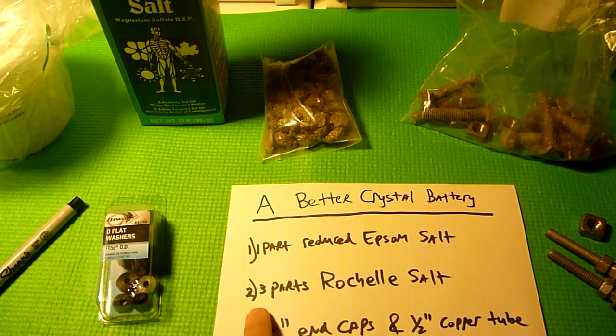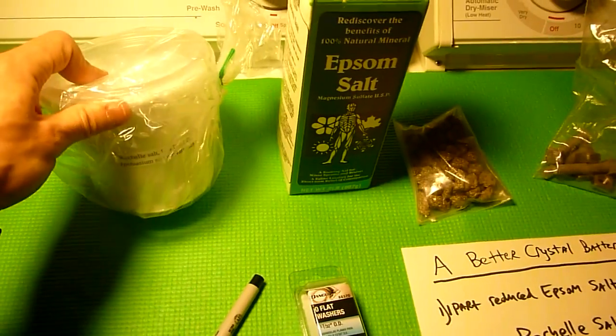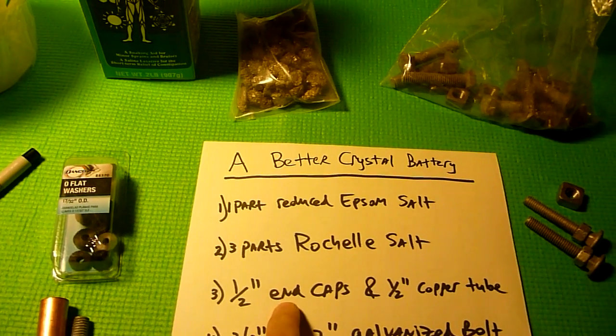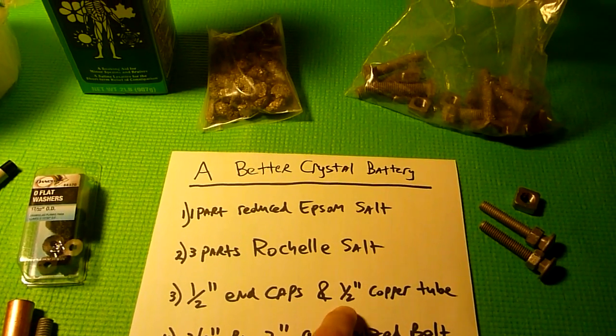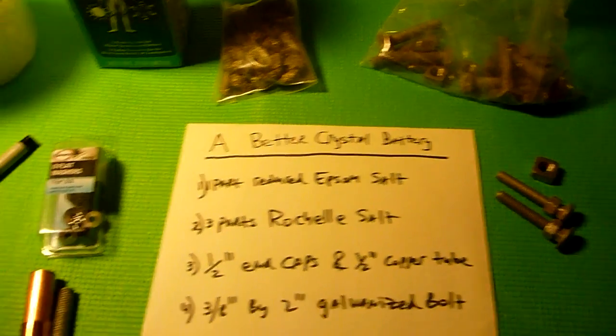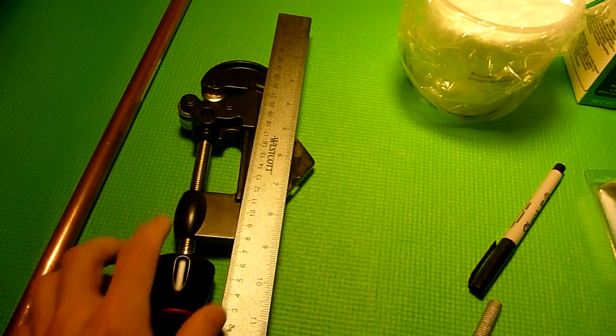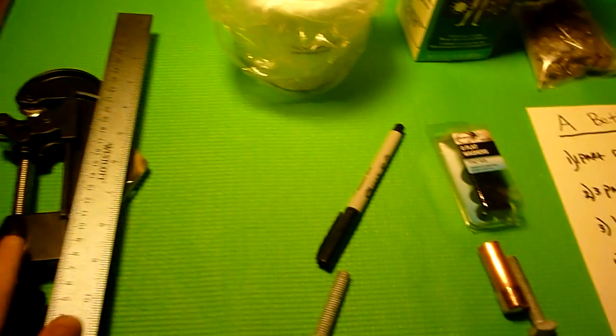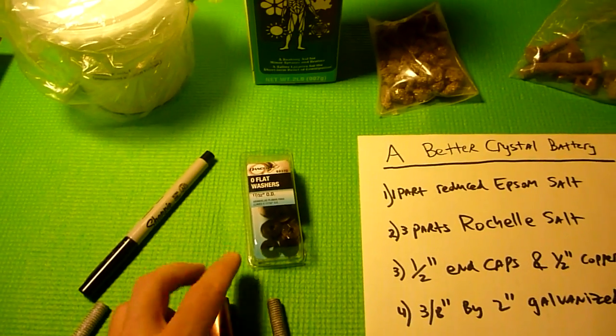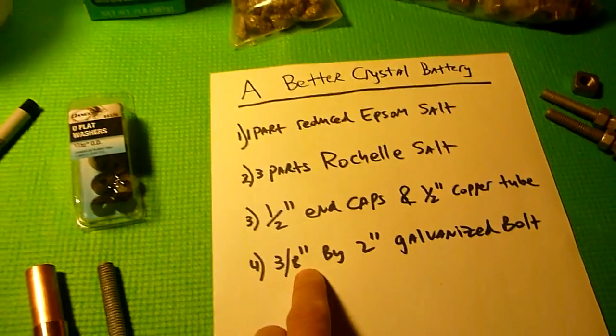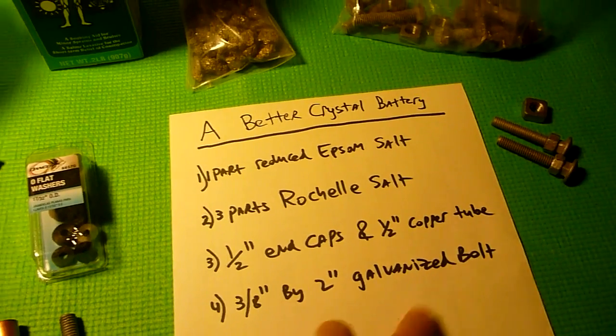Next thing you need is three parts Rochelle salt. Then you'll need a half inch copper tube and end caps. You're also going to need a good tube cutter, it's going to save you a lot of headache. Last thing you'll need is three quarter of an inch by two inch galvanized bolt.